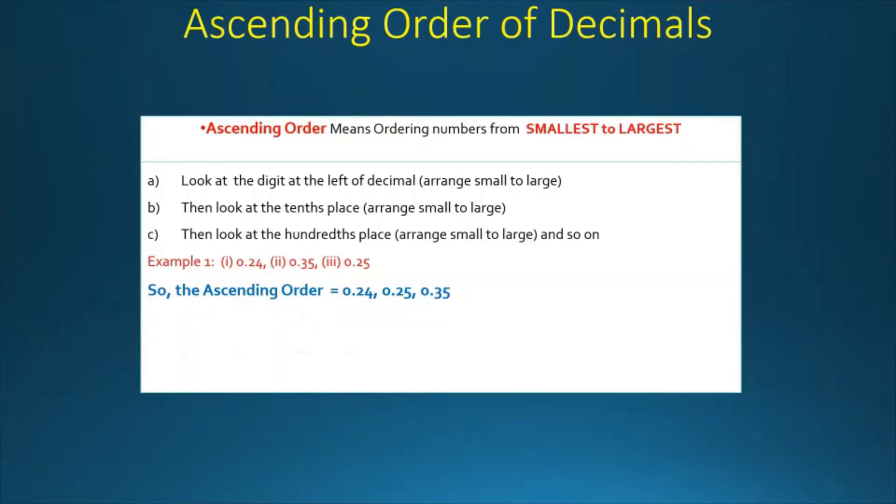The second example is 7.51, 7.39, 7.31, and 8.47. So the ascending order of this will be 7.31, 7.39, 7.51, and 8.47.